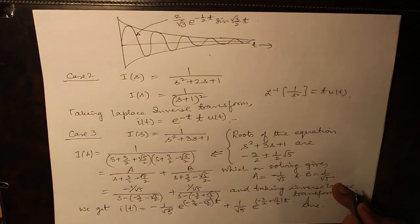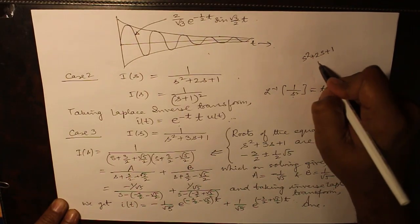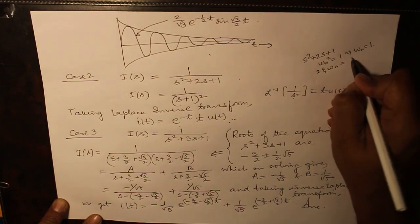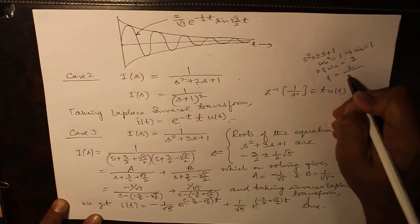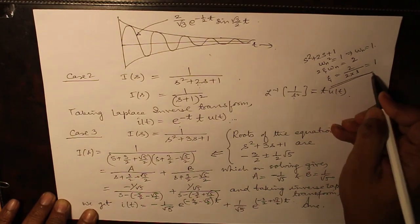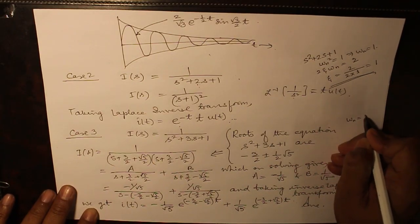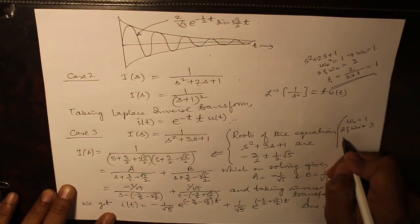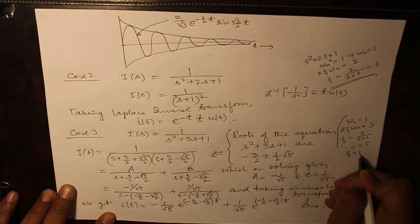Now let's quickly go through what is the value of ζ in both the cases. In this case s² plus 2s plus 1, ωN² is 1 which means ωN is 1. 2ζωN equals 2 here so ζ equals 2 over 2 into value of ωN that is 1 which gives you 1. So critically damped case where ζ equals 1. Let's take the third one, here you have s² plus 3s plus 1. ωN as before is 1 and 2ζωN equals 3 which gives you ζ as being equal to 3 over 2 into 1 which is 1.5. So ζ is greater than 1, overdamped case.